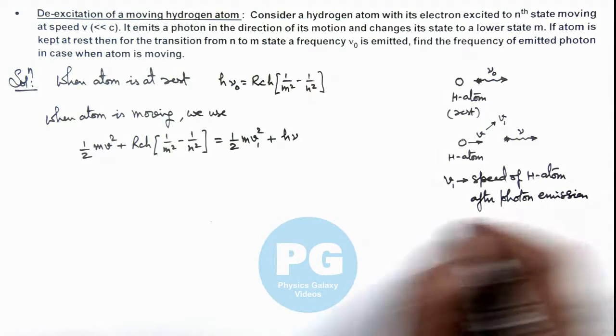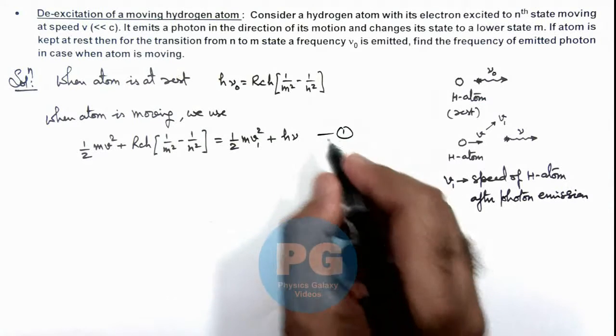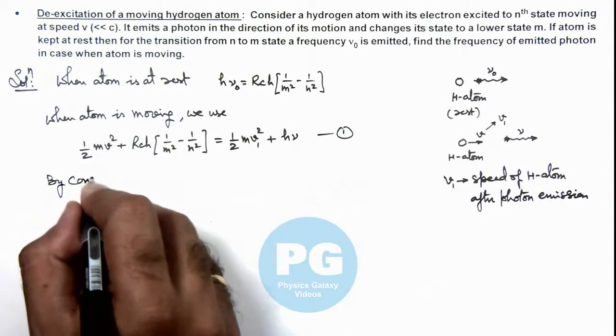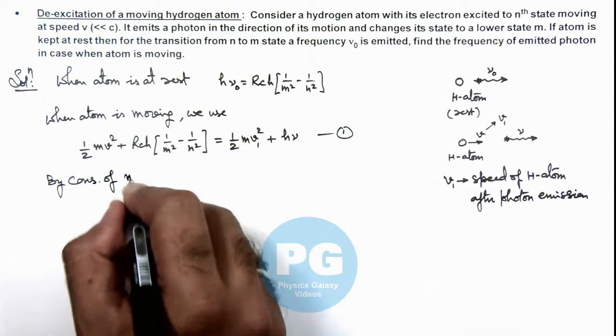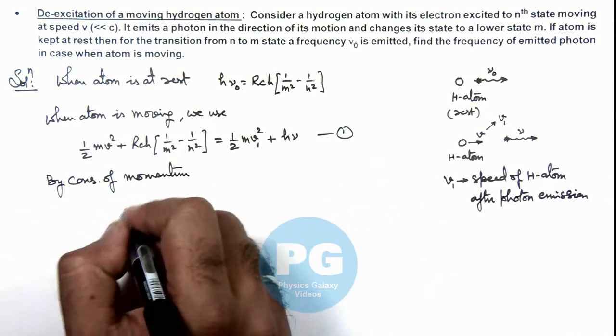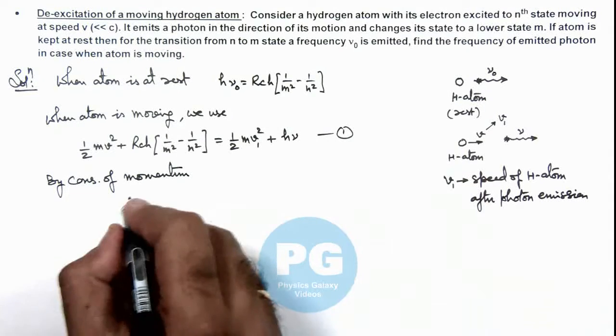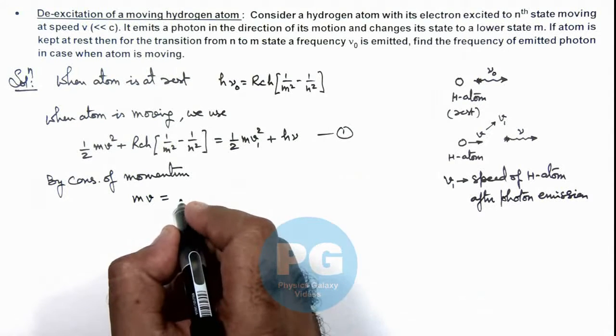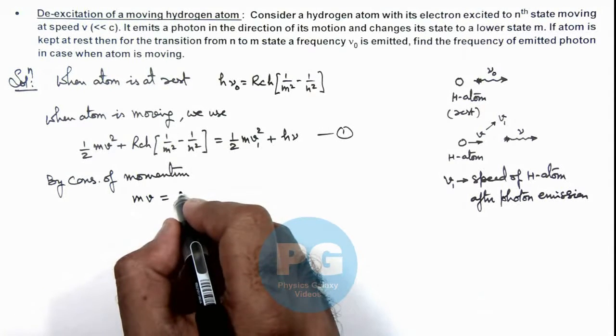Now in this situation, say if this is first equation, here we can also write by conservation of momentum. Here we can use the initial momentum of hydrogen atom was m*v, and after emission of this photon